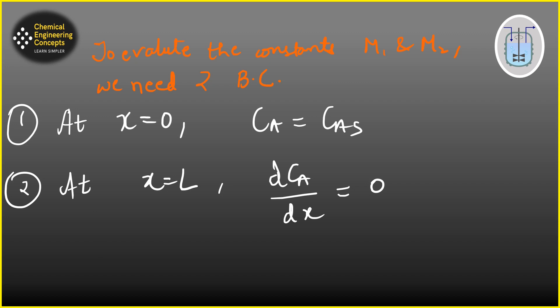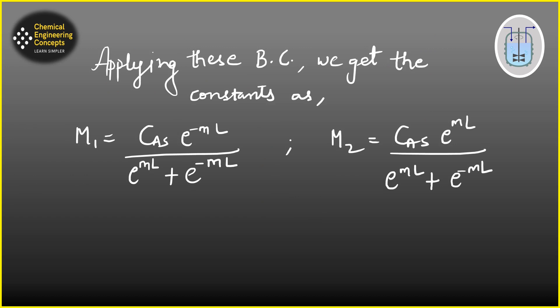Since it's a second-order ODE, we need two boundary conditions to find m1 and m2. At x = 0, the concentration equals the surface concentration C_As. At x = L (the dead end of the pore), dC_A/dx = 0. Applying these boundary conditions gives us the values of m1 and m2.